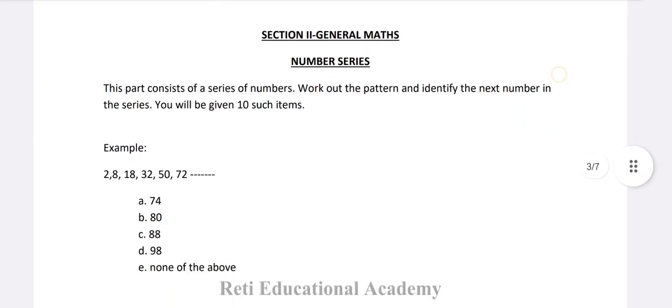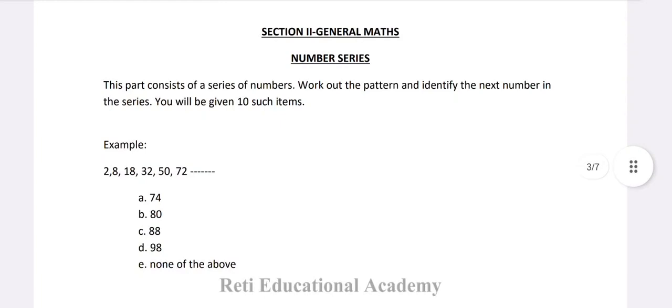Section 2: General Mathematics — Number Series. This part consists of a series of numbers. Work out the pattern and identify the next number in the series. You will be given 10 such items in the test.